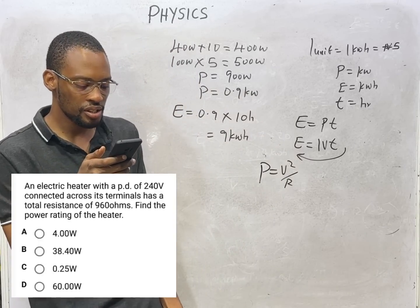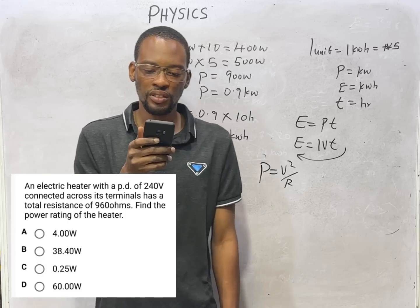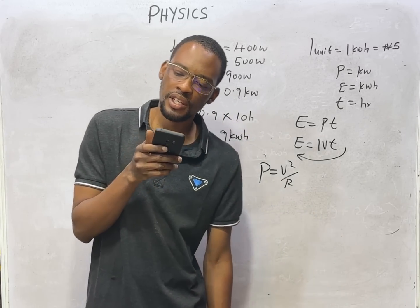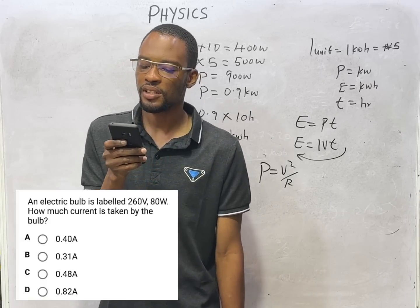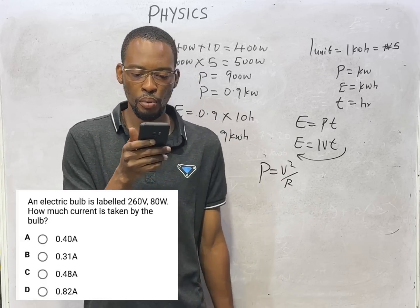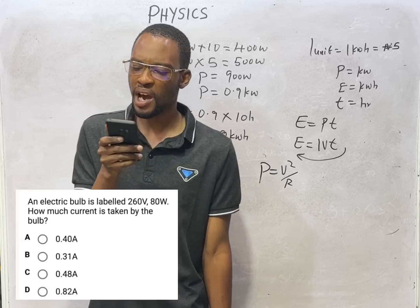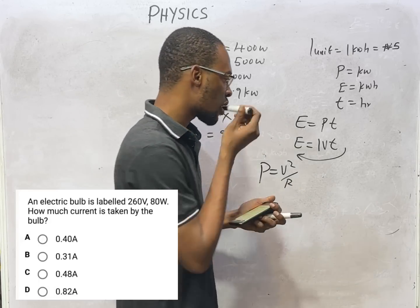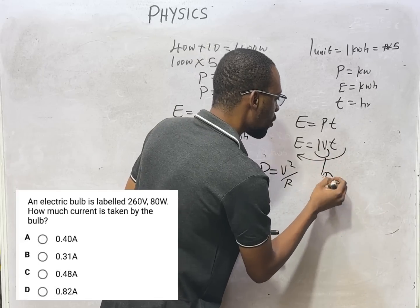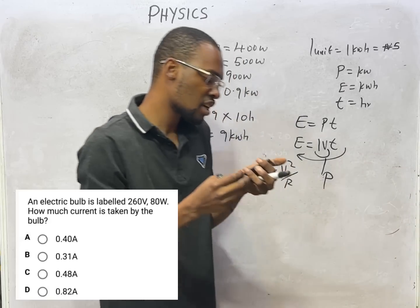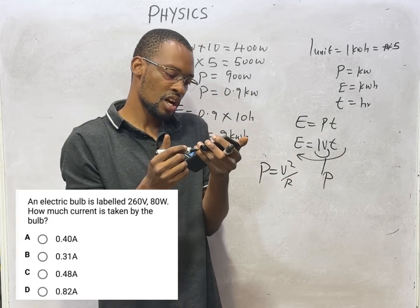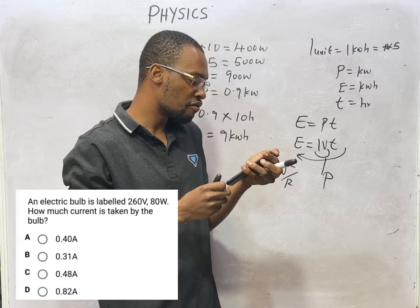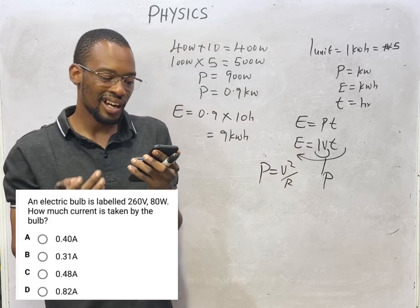An electric bulb is labeled 260 volts, 80 watts. How much current is taken by the bulb? We have the voltage and we have the power. Power is IV — current times voltage. So if power is current times voltage, and we have our power and our voltage, current will be power divided by voltage. That gives you 0.31 ampere.